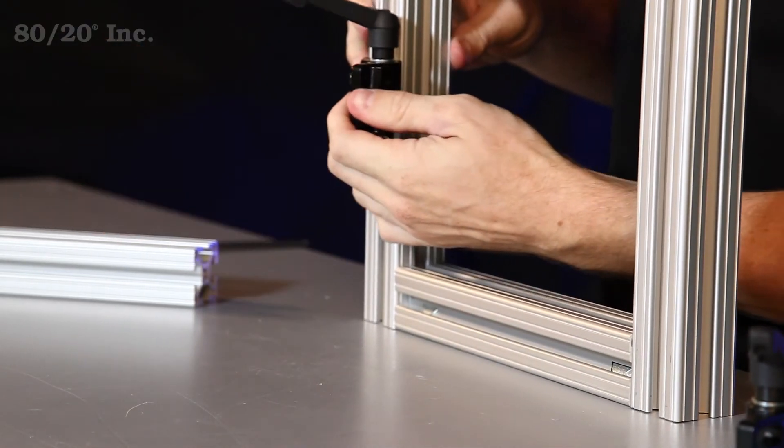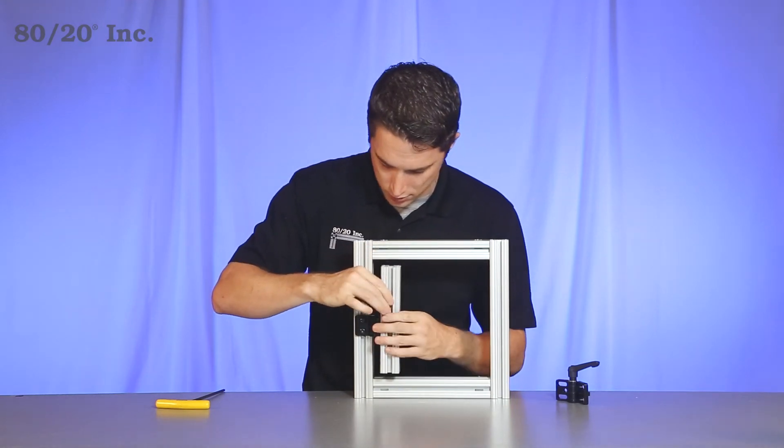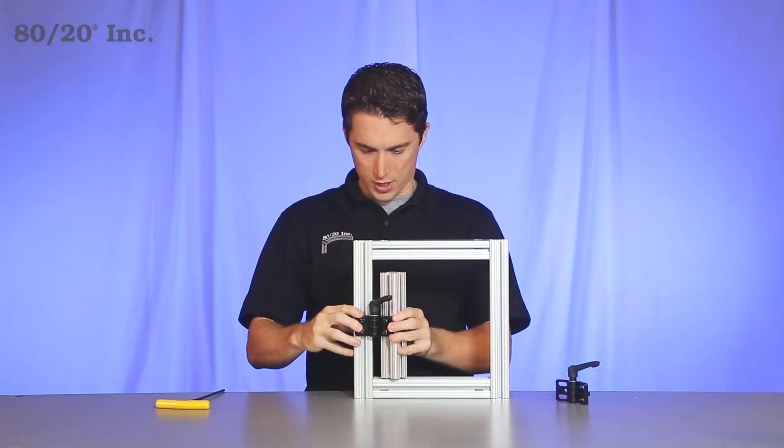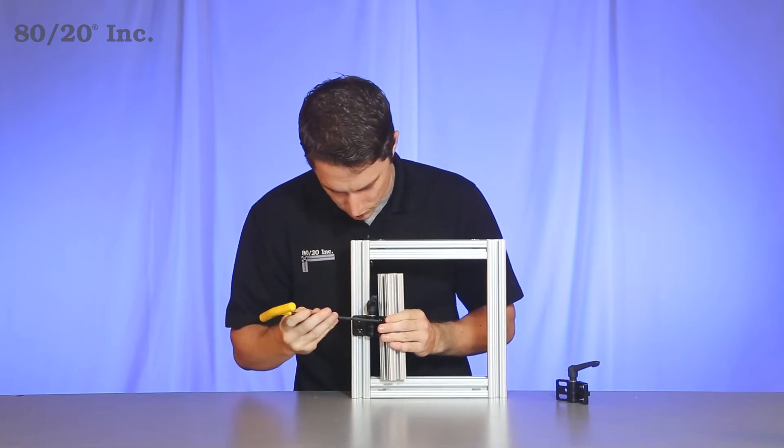Once we've got that, we'll grab the other profile and slide it onto the other half of the hinge. We'll get the location down and tighten that down as well.